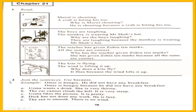Now we have Exercise Number Two — join the sentences, use 'because.' You have to do it in your notebooks. Example: Omar is hungry. Full stop. He did not have any breakfast. You have to join these two sentences by using 'because.' Omar is hungry because he did not have any breakfast. Nothing is changed in both sentences — we just added 'because' between them, removed the full stop, and changed the capital H into small h.